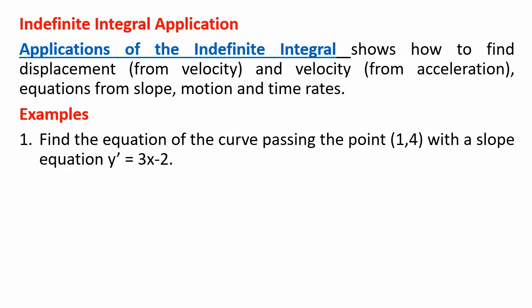For example, find the equation of the curve passing through the point (1, 4) with slope equation y prime equals 3x minus 2. So the solution: dy over dx equals 3x minus 2, or dy equals (3x minus 2) dx.